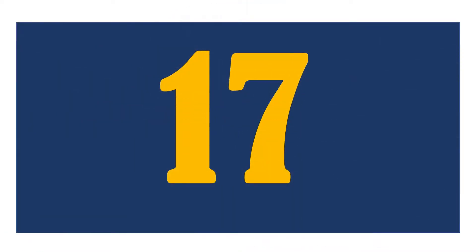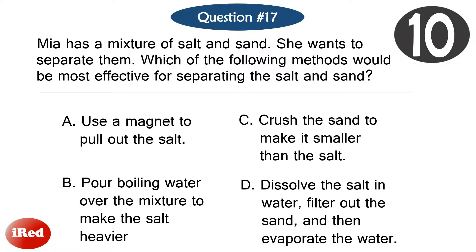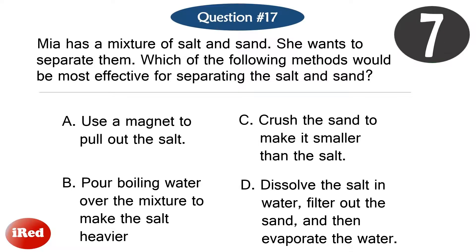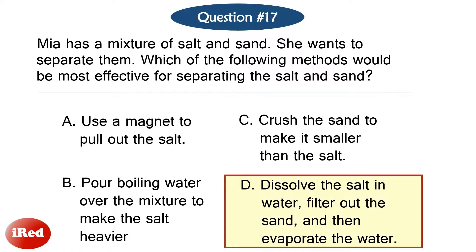Question number seventeen. Mia has a mixture of salt and sand. She wants to separate them. Which of the following methods would be most effective for separating the salt and sand? The correct answer is letter D, dissolve the salt in water, filter out the sand, and then evaporate the water.